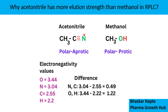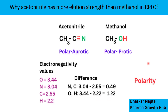In acetonitrile, the electronegative nitrogen atom is connected to carbon. The difference in electronegativity between nitrogen and carbon is 0.49. Similarly, in methanol, the difference in electronegativity between oxygen and hydrogen is 1.22. The more the difference in electronegativity, the more polarized the bond, and hence the more polar the compound.